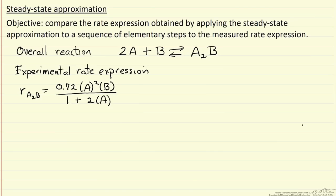Here we're going to use the steady state approximation for the overall reaction of two molecules of A reacting with a molecule of B to make the compound A₂B — a reversible reaction. We have a rate expression that we want to compare to what we would obtain from the steady state approximation, where we'll apply it to a sequence of elementary steps.